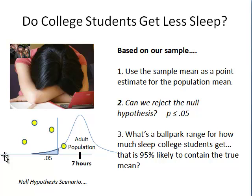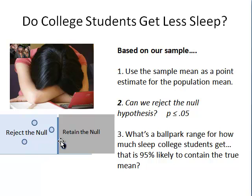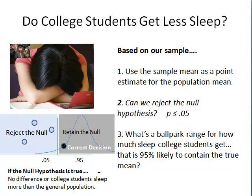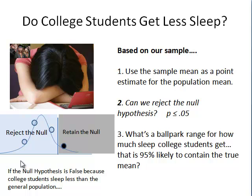Coming back to our distribution of the adult population, let's assume for a moment that the null hypothesis is true. If that's the case, then 0.95 of our sample means should fall in the non-reject zone, or the retain-the-null area. So we have a decision: will we reject the null hypothesis or retain it? If the null hypothesis is true, we know that just due to error we'll reject the null 0.05 of the time, but 0.95 of the time we'll make the correct decision. Rejecting the null when it's true would be a type one error. On the other hand, if college students really do need less sleep, rejecting the null would be a correct decision, and retaining it would be a type two error.